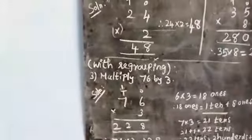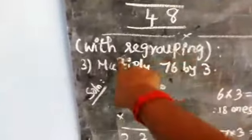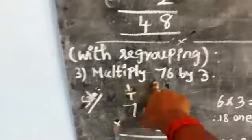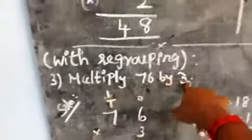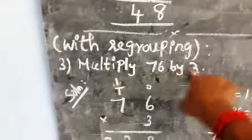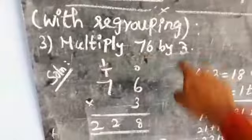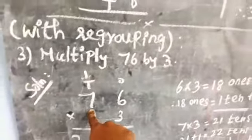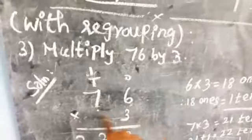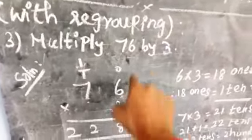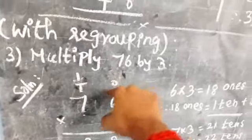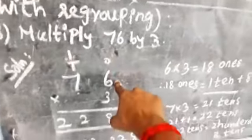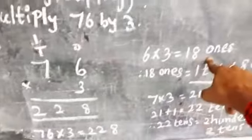Now look at multiplication with regrouping. Multiply seventy-six by three. Here, write seventy-six into three and denote the place values: ones and tens. Six threes are...?